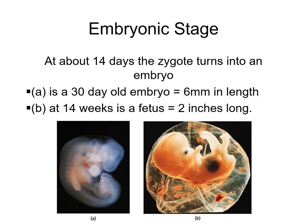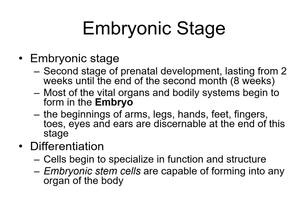Moving further, we reach the embryonic stage. At two weeks or 14 days, the zygote turns into an embryo. A 30-day-old embryo is six millimeters in length — smaller than the nail of your pinky finger — and by 14 weeks it would be two inches long. In both cases you would be able to hear a heartbeat. The embryonic stage is incredibly important — this is one of those times where alcohol and drug use can have a particularly horrible and disastrous impact on development.